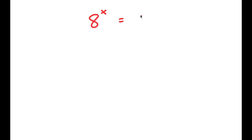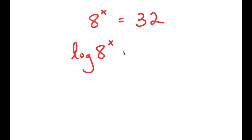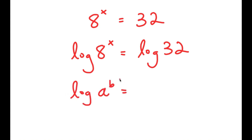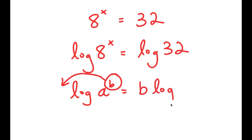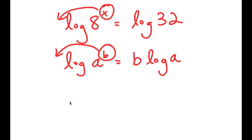In this video, I'm going to solve the equation 8 to the power of x is equal to 32. To solve this, I'm going to start by taking the log on both sides, so I get log of 8 to the power of x is equal to log 32. Now using the property that log of a to the power of b equals b times log a, I can move x to the front of the logarithm. So I get x times log of 8 is equal to log of 32.